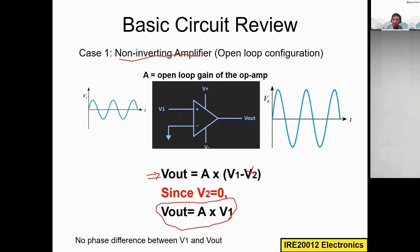Note that in this configuration there is no feedback. Feedback means taking a portion of the output and feeding it back to the input terminal. Without feedback, this is called an open-loop configuration. In the non-inverting open-loop amplifier, the input signal applied to the positive terminal is amplified at the output and the phase of the signal remains the same.